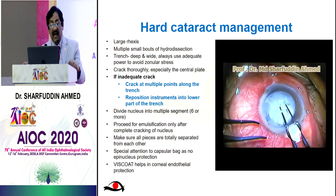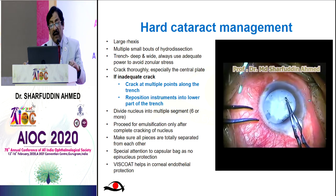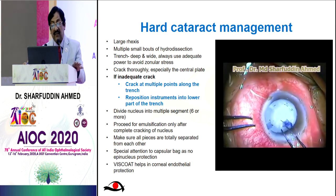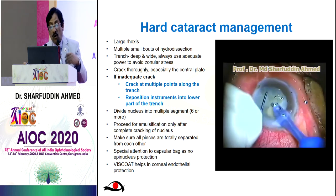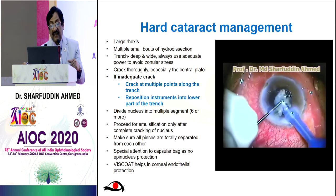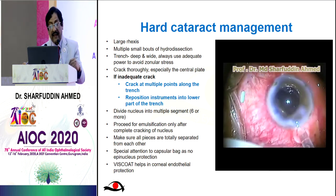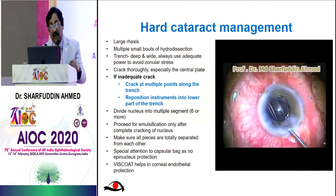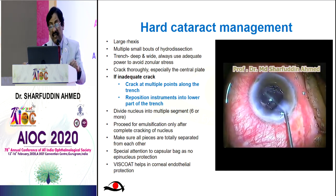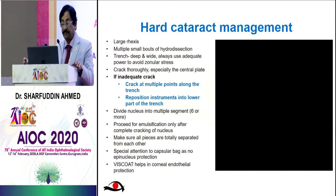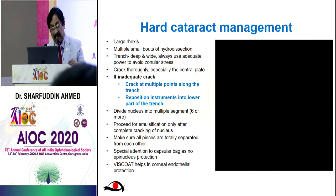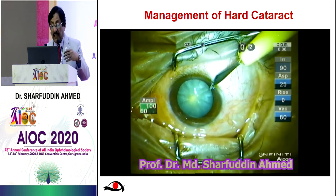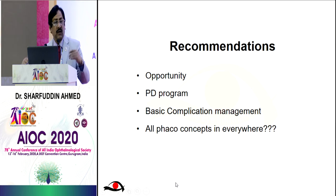In hard cataract, a large rhexis is a must, with multiple small bouts of hydrodissection. Trench deep and wide, always using adequate power to avoid zonular stress. Crack thoroughly, especially the central pole — even with an inadequate crack, crack at multiple points along the trench and reposition instruments into the lower part of the trench. Divide the nucleus into multiple segments, proceed for emulsification, and make sure all pieces are totally separated from each other.